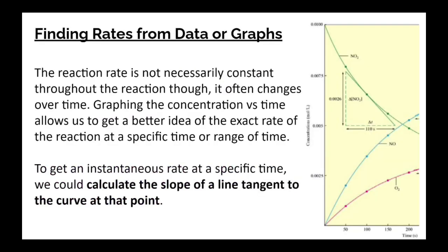Now, next thing, also pretty straightforward, self-explanatory, reading and finding rates from graph or data. The reaction rate is not necessarily constant throughout the reaction. So this graph is a pretty big graph. You can see that the curves are not constant. They're not straight line curves. It often changes over time. So we can graph that change in concentration over time to allow us to get a better idea of the exact rate of the reaction at a specific time or in a specific range of time.